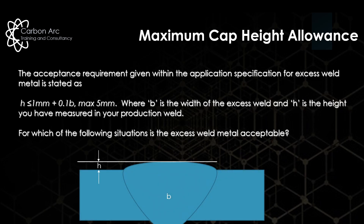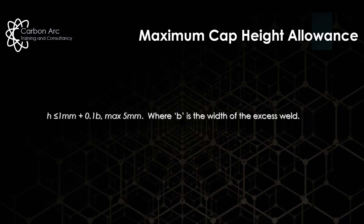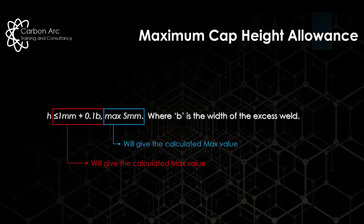H is the cap height measured and B is the weld width. We use this equation to determine whether the height measured is compatible with and acceptable to the specification. The equation has two parts: the red part — 1 mm + 0.1 × B, where B is the width of the excess weld metal — gives your maximum allowable value. However, no matter what that number is, it cannot exceed 5 mm. If the red section gives you 7 mm, that's not allowed — a top ceiling of 5 mm applies.